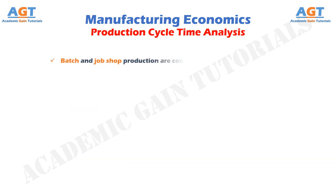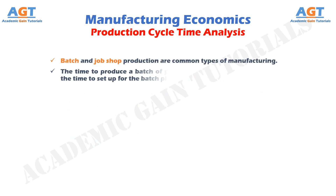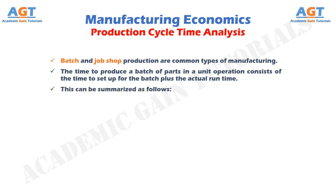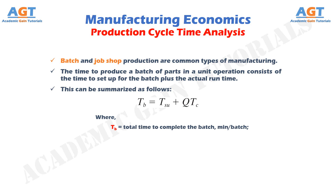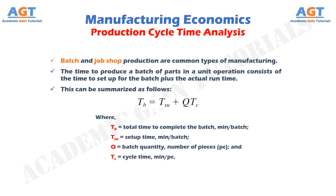Batch and job shop production are common types of manufacturing. The time to produce a batch of parts in a unit operation consists of the time to set up for the batch plus the actual run time. This can be summarized as TB equals TSU plus Q times TC, which is equation number two. Where TB represents total time to complete the batch in minutes per batch, TSU represents set-up time in minutes per batch, Q represents batch quantity in number of pieces, and TC represents cycle time as defined in the first equation, in minutes per piece.